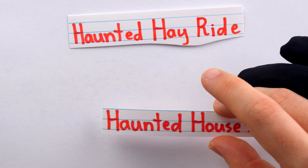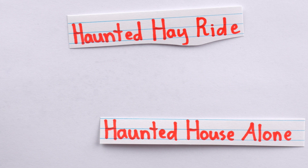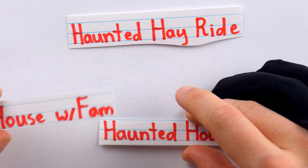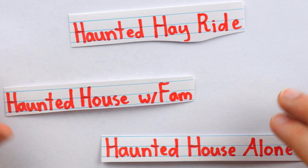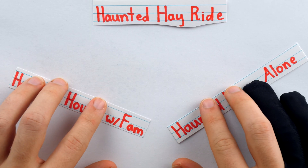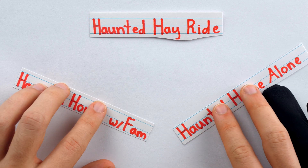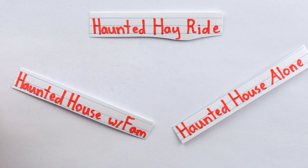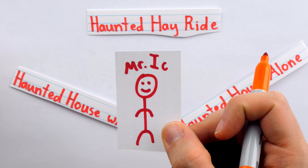We're considering three choices: going on a haunted hayride, going to a haunted house alone, and going to a haunted house with your family. I'm going to have to zoom out a little here to fit all of these choices on screen. Now let's talk about how someone could have intransitive preferences among these three choices. We're going to talk about our friend Mr. Ick.